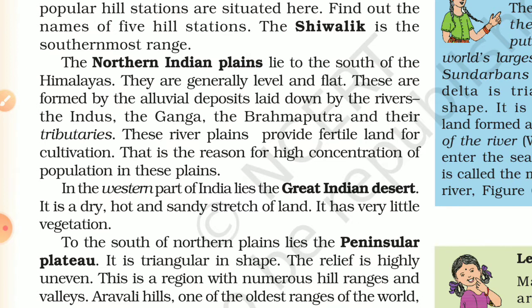The fertility is due to erosion and deposition — the deposition is carried by rivers and wind. The Ganga, Brahmaputra, and their tributaries have provided fertile land suitable for cultivation over a large area.